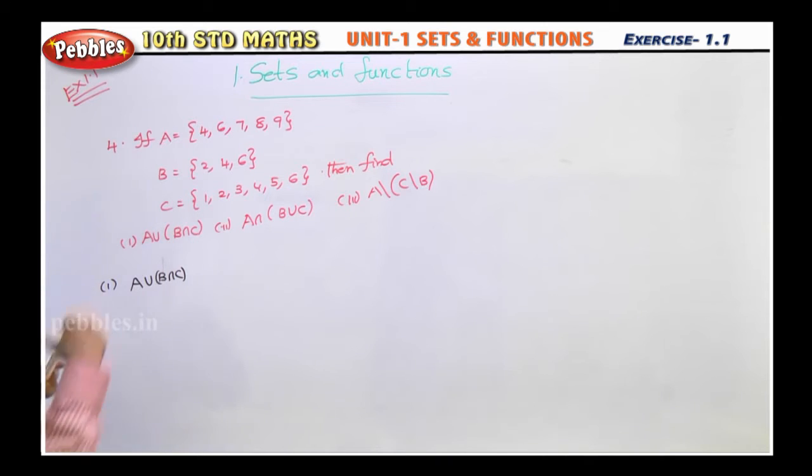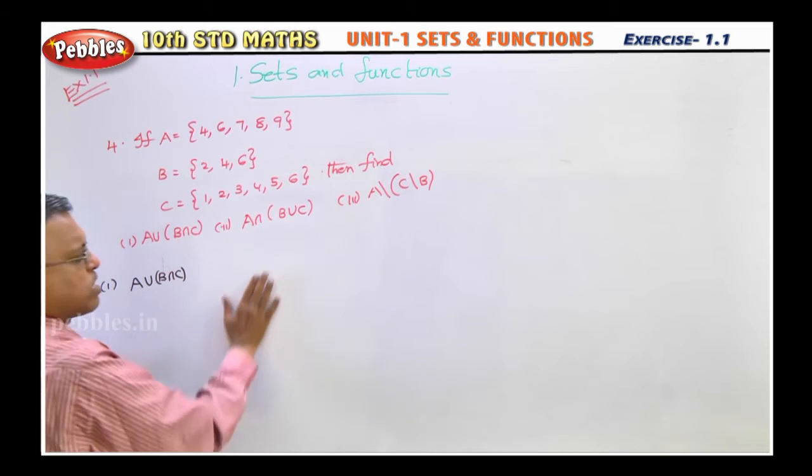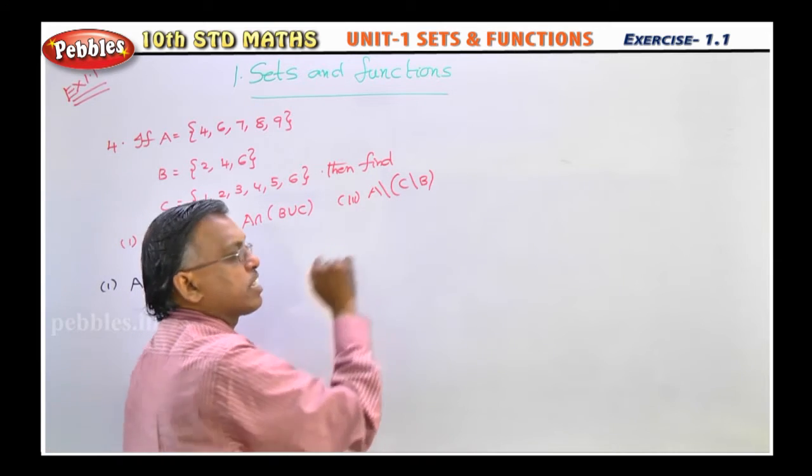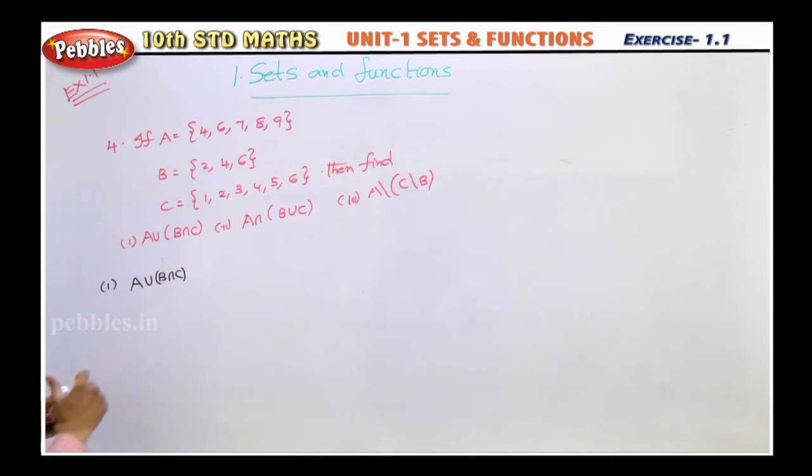Then find A union B intersection C. Next, A intersection B union C. Next, A slash C slash B. Now, one by one we will see.